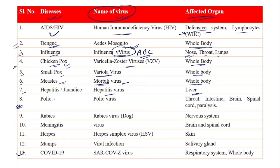Number eight: Polio was caused because of the Poliovirus. In initial stages, the poliovirus attacks the throat, then the intestine, then slowly attacks the brain and spinal cord, and people will turn into paralysis. When we were children, we used to have certain doses of polio vaccine to tackle the poliovirus.